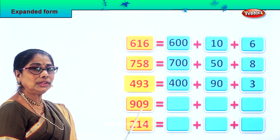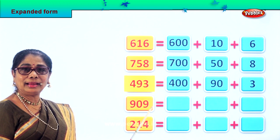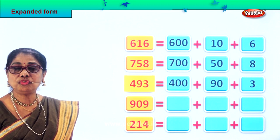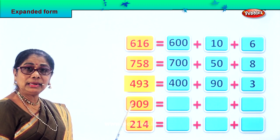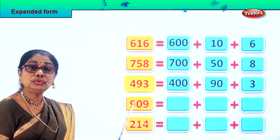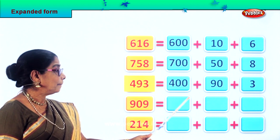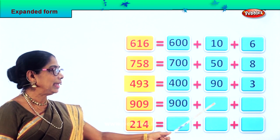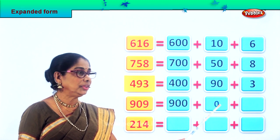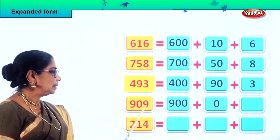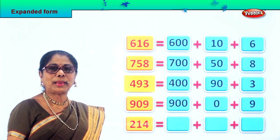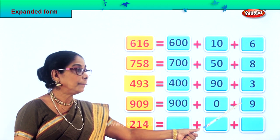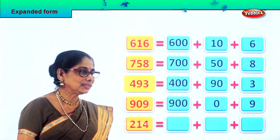Let's take the next number: 909 — nine hundred and nine. How many hundreds? Nine, so nine hundred. Plus zero tens — nothing in the tens place, so just put zero. Plus nine ones. So 909 is expanded as nine hundred plus zero tens plus nine.